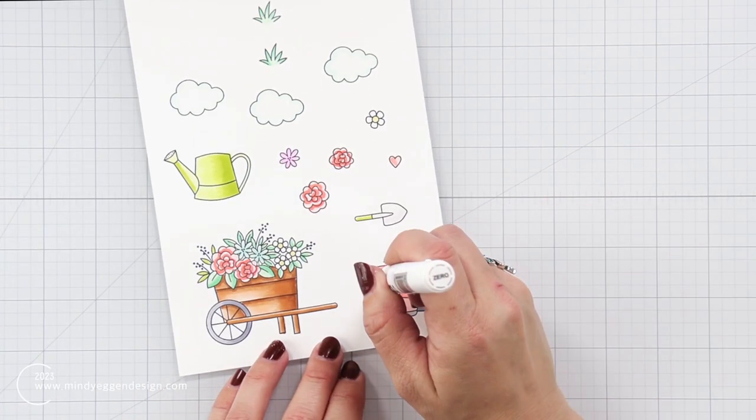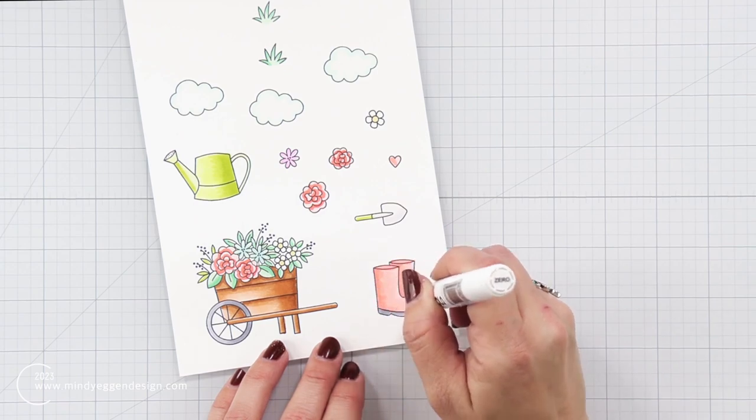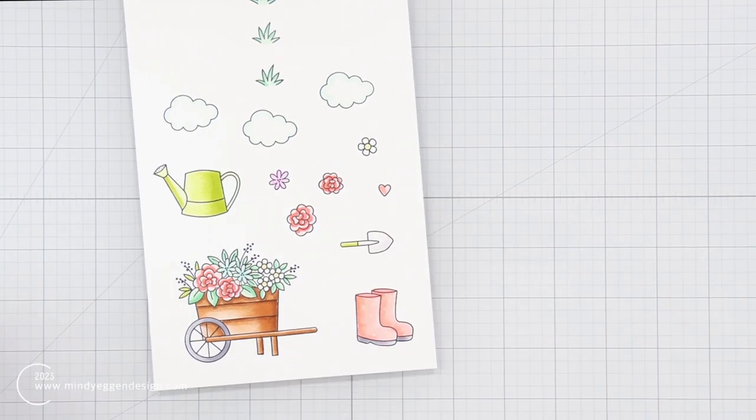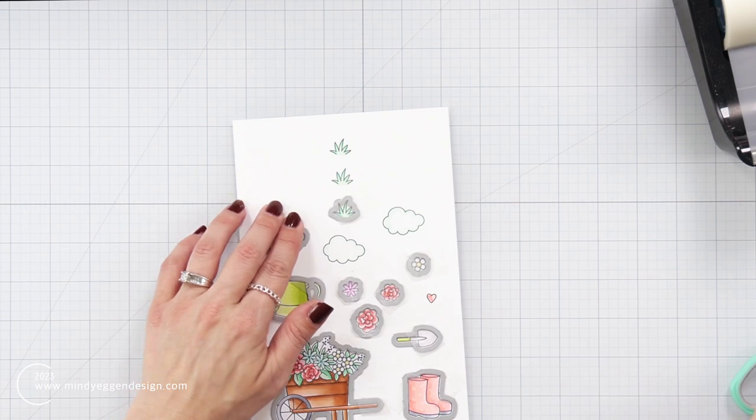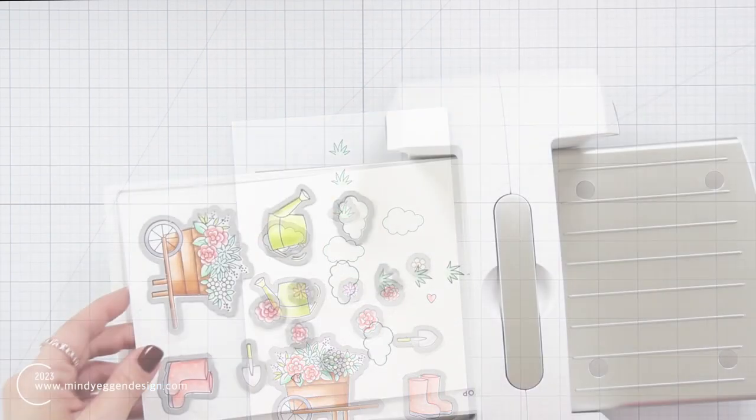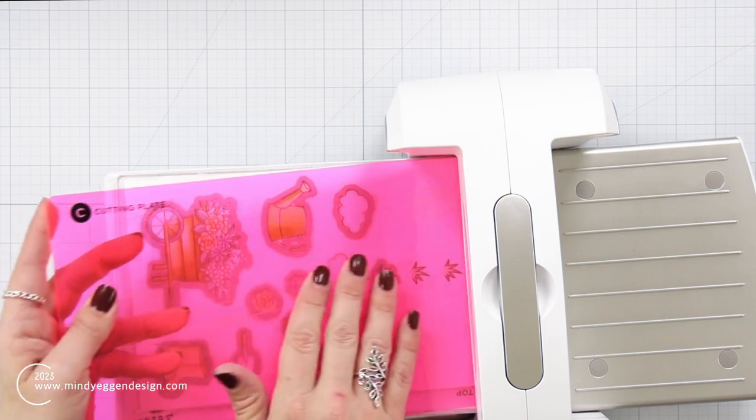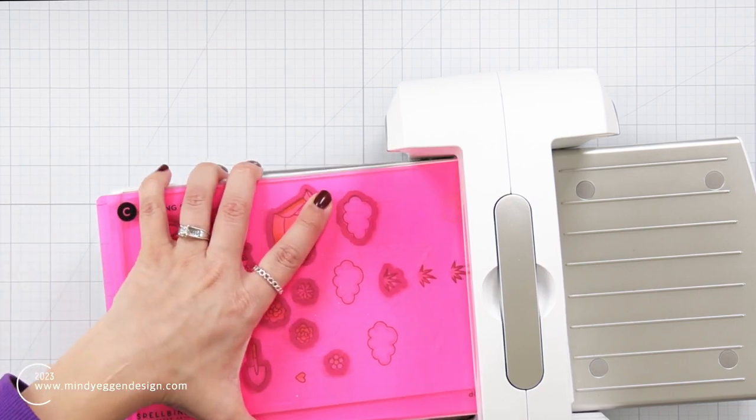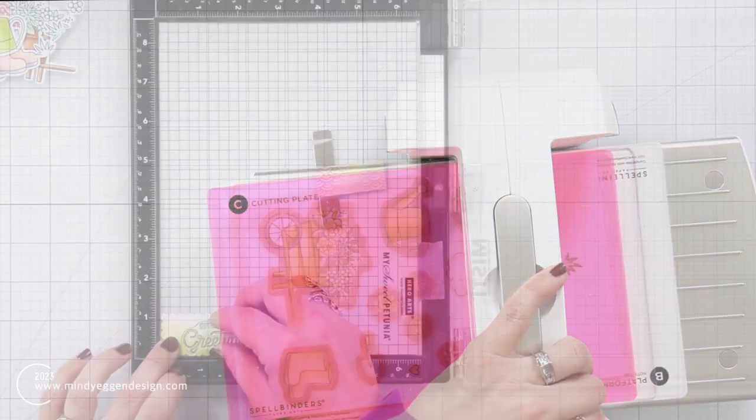Then I added a dark gray to my bottom of my boots and I'm taking that zero marker once again and just adding dots because it's going to kind of lift up that ink and give it more of a polka dot look. Then I used the coordinating dies over the images and ran these through my die-cut machine.